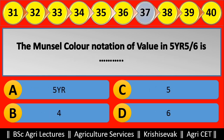Question 37: The Munsell color notation value in 5Y 6/blank — the value is blank. Options are: (a) 5Y, (b) 4, (c) 5, (d) 6. Right answer is 5, option C.